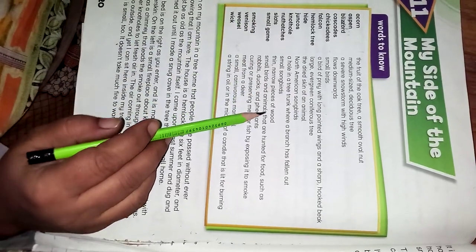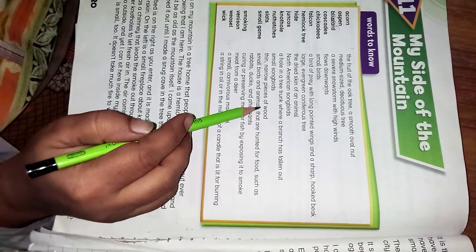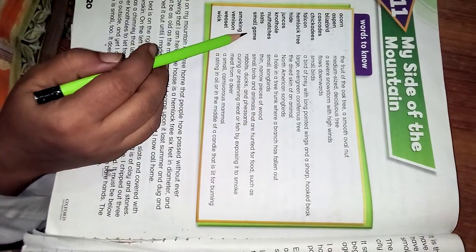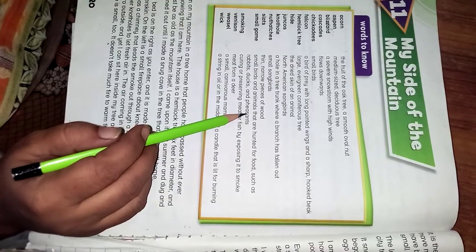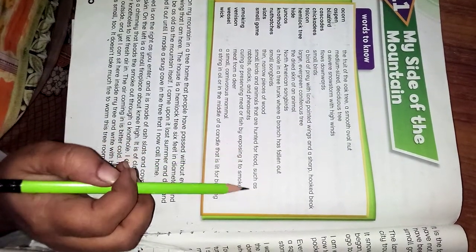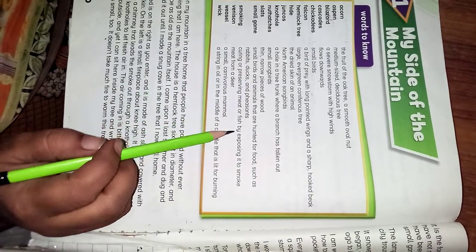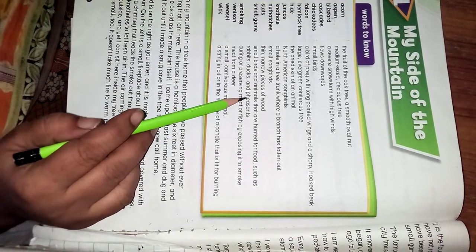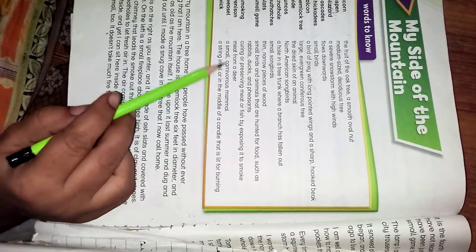Slits: thin narrow piece of wood. Patla, barik lakari ka tukra. Small game: small birds and animals that are hunted for food such as rabbits, ducks and pheasants. Yani, chhote parinde aur janwar jo khane ke liye shikar kiye jaate hain, jaise rabbit, ducks waghaira.